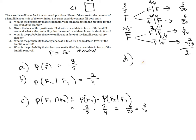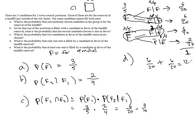Letter D is now easier to answer. We want the probability that only one seat is filled by a candidate in favor. That means either the first is in favor and the second is not, or the first is not and the second is. That's six out of twenty plus six out of twenty, which is twelve out of twenty, or three-fifths. So three out of five times, you will get a situation in which exactly one of the two candidates is in favor.